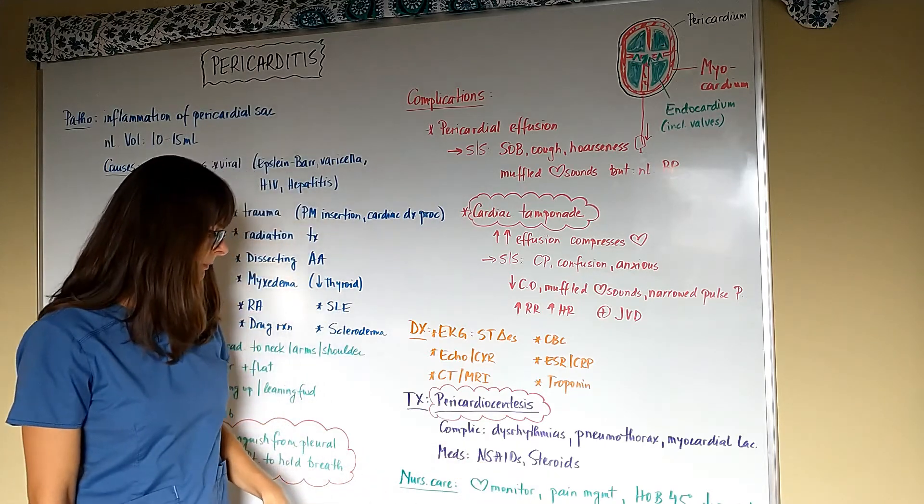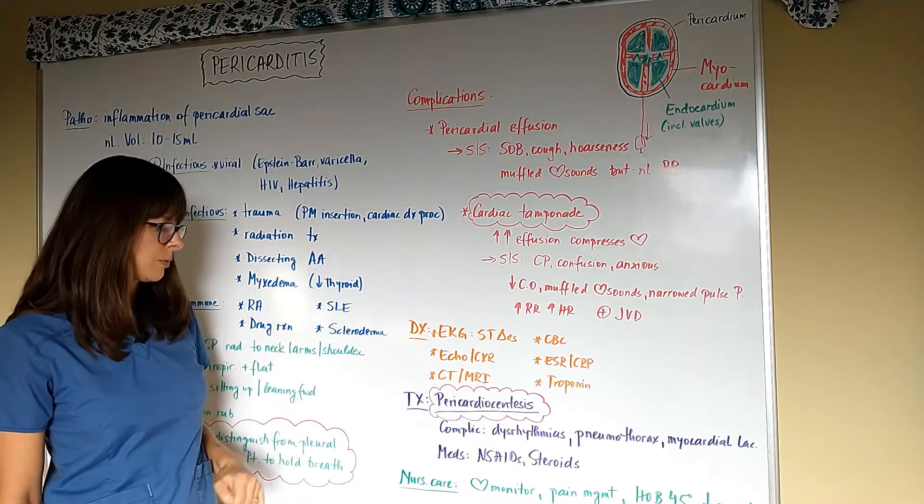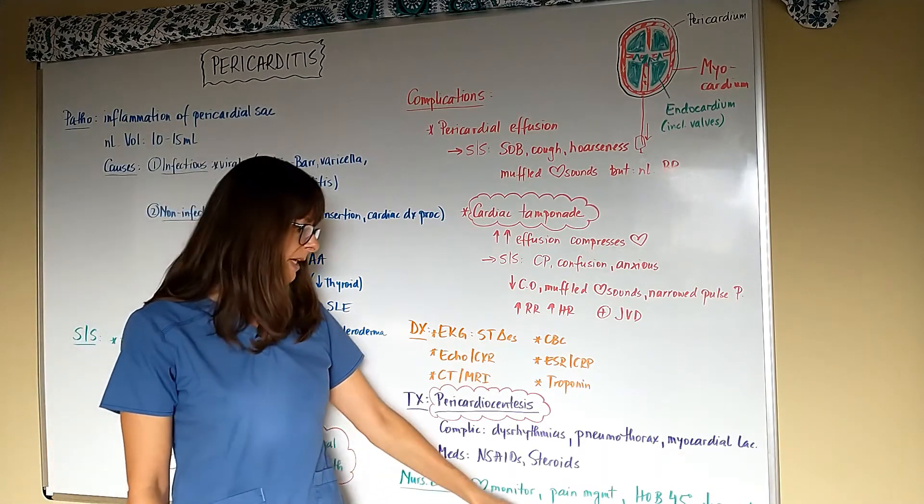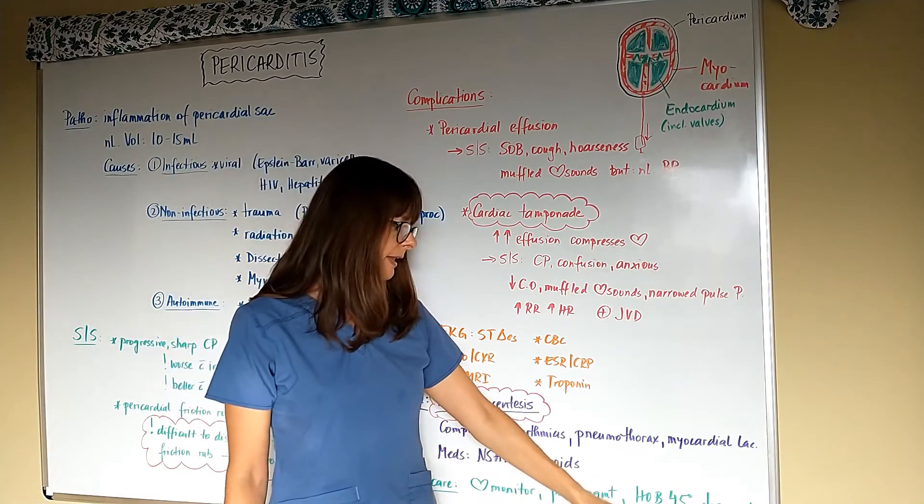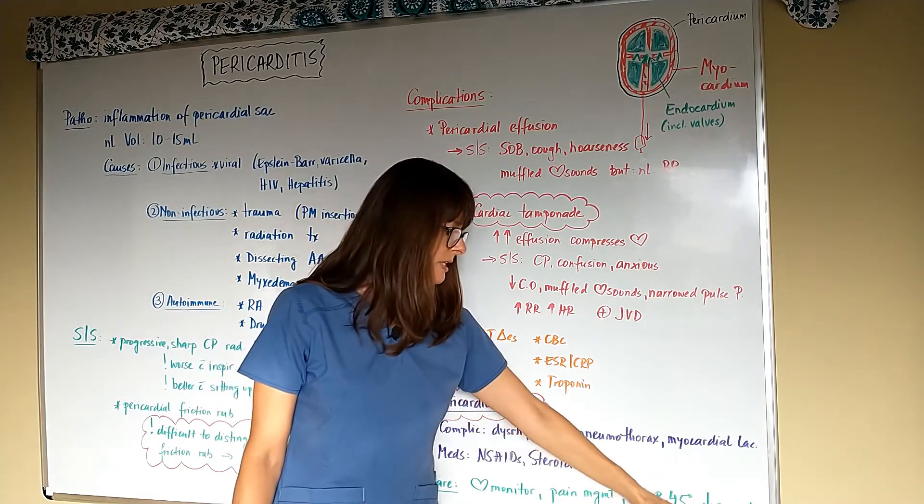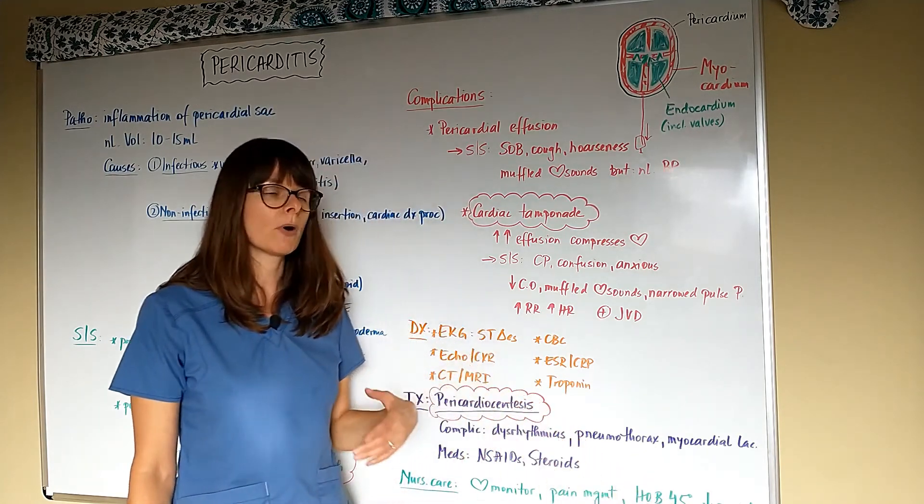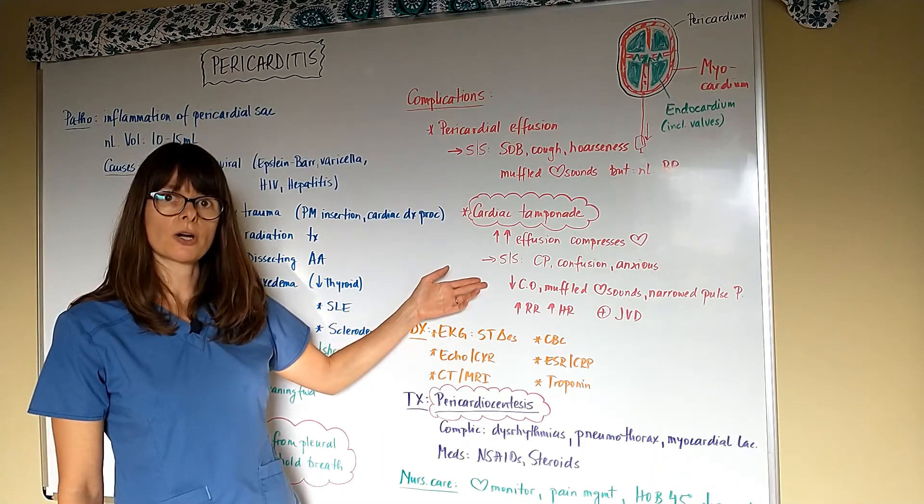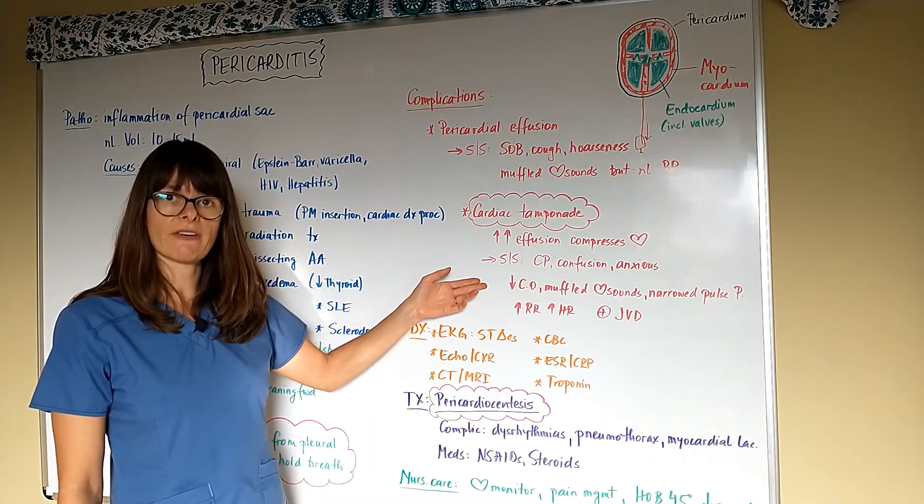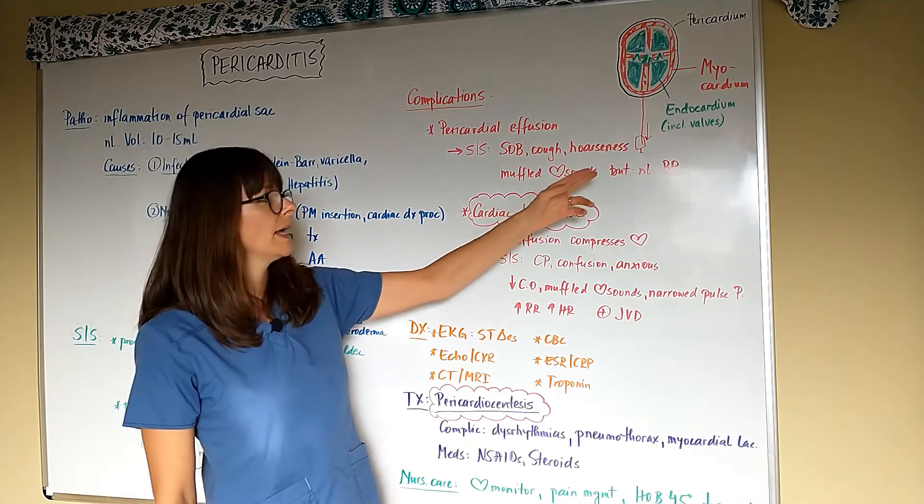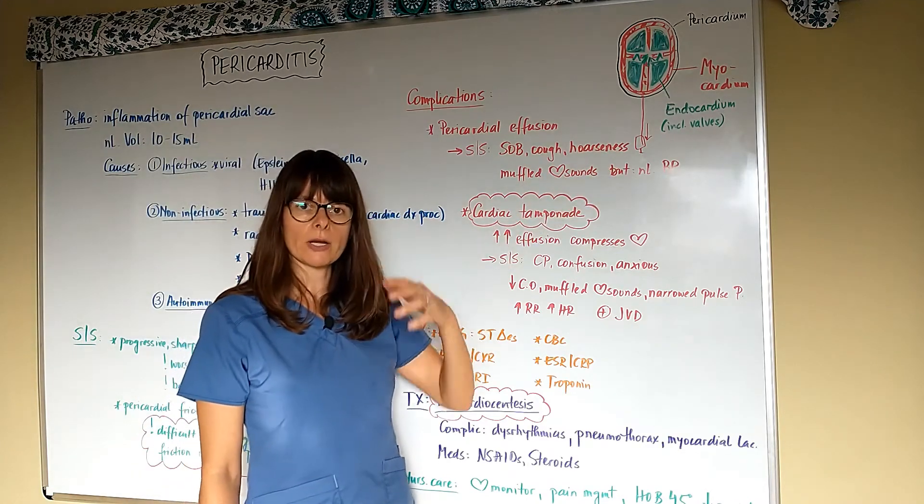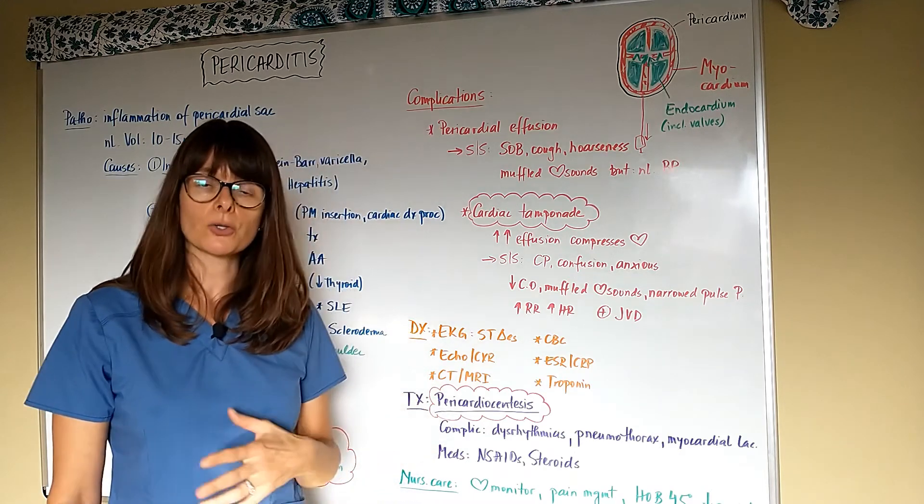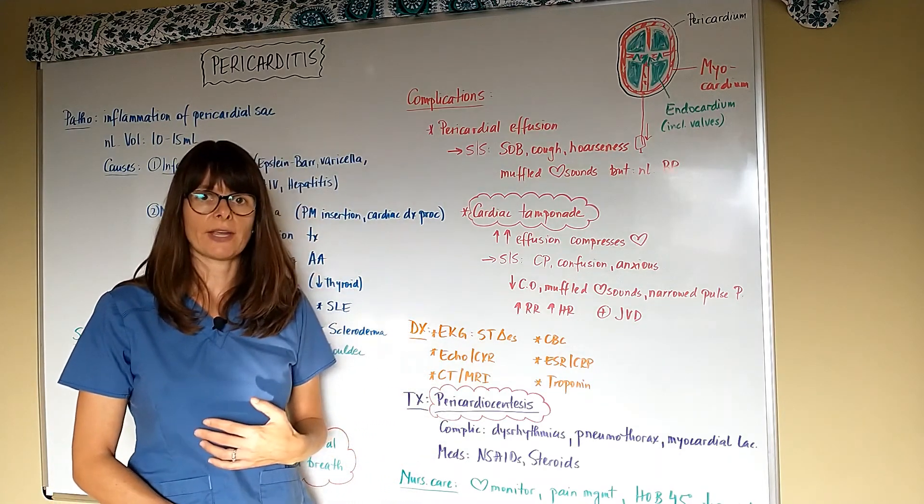Nursing care for a patient with pericarditis always involves cardiac monitoring, management of pain, elevating the head of the bed, decreasing the anxiety, and then monitoring the patient for any signs and symptoms of decreased cardiac output by ensuring that their vital signs are stable. And if they have this pericardial window, close monitoring of I's and O's to see how much output the patient is having.